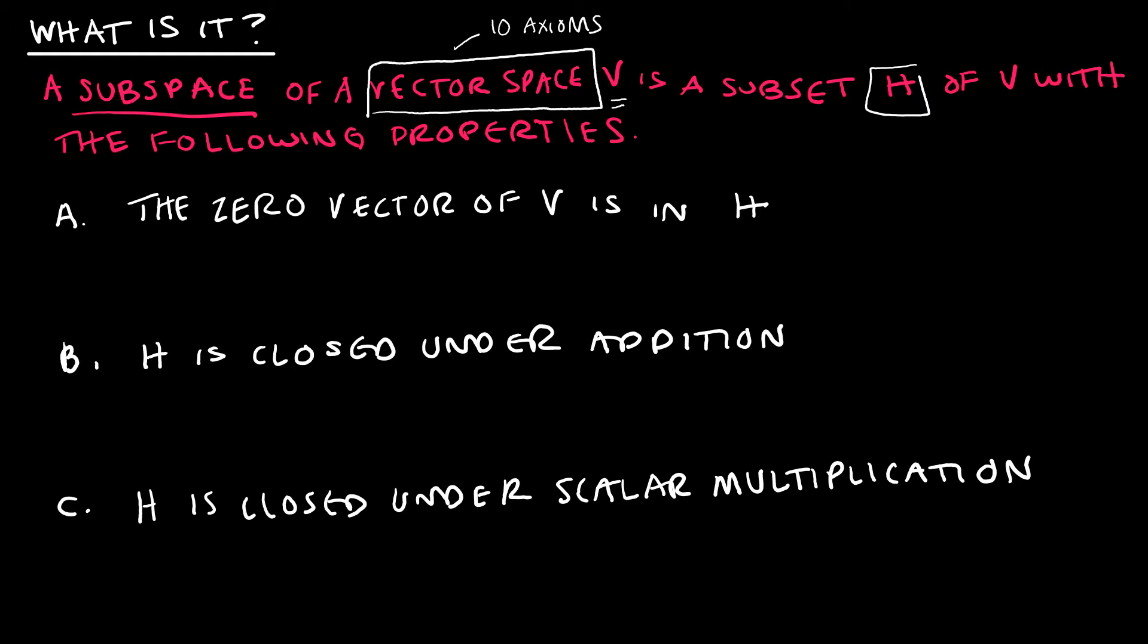has vectors that fit the following properties. For instance, let's say I've got V, this is just my random vector space containing whatever I want it to contain. Within that, smaller or equal to V is H, which is a subspace. Notice I've drawn it inside V, which means it contains values that are in V. So it has to be something that's already in V in order for it to be in H. It's a subset.